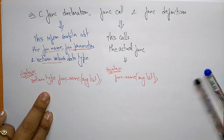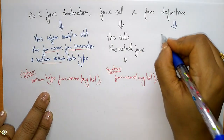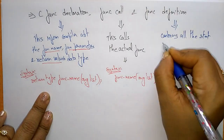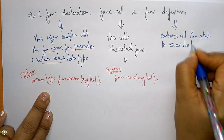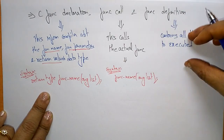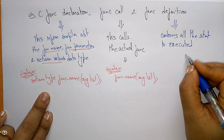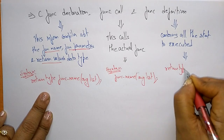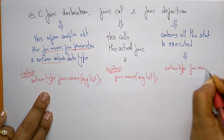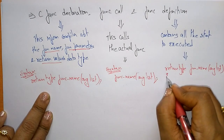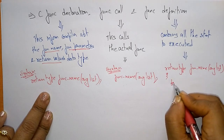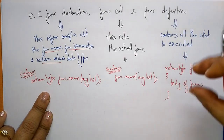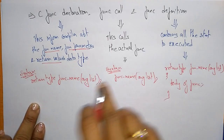Now, what is a function definition? The function definition contains all the statements to be executed, present within the braces. The syntax is: write the return type, then the function name, then the argument list, and within the braces write the body of the function, then close the braces. This is the function definition.